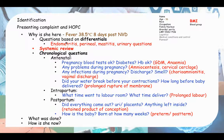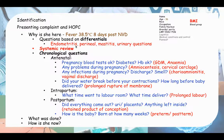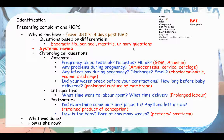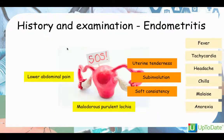For questions based on differentials, your top number one differential should be endometritis because that's the most common cause of puerperal pyrexia. Other gynaecological causes include perineal infection, mastitis, and urinary tract infections.